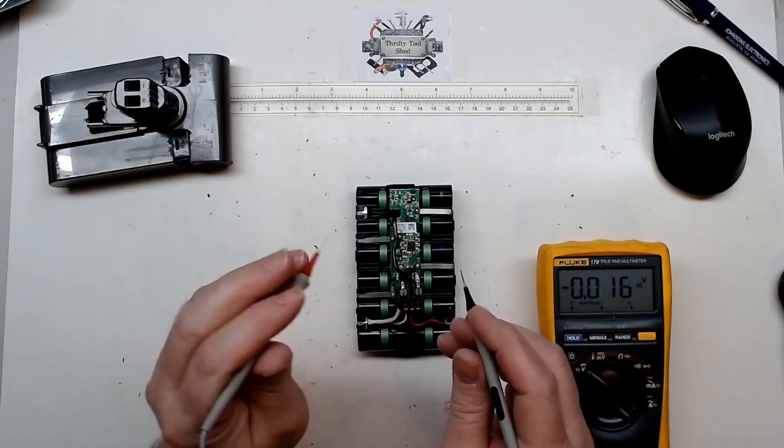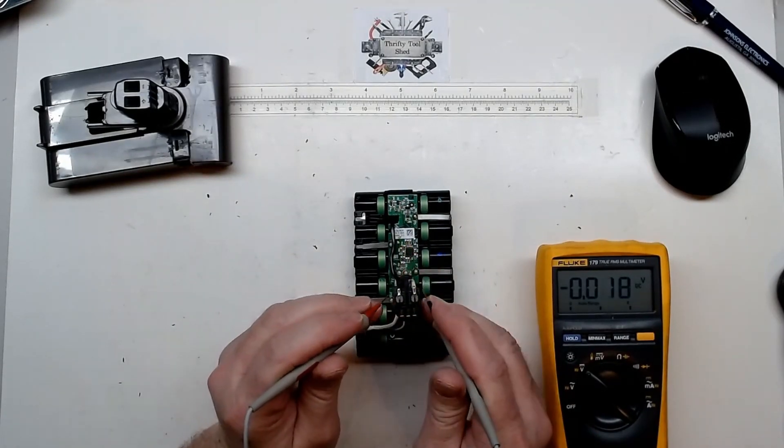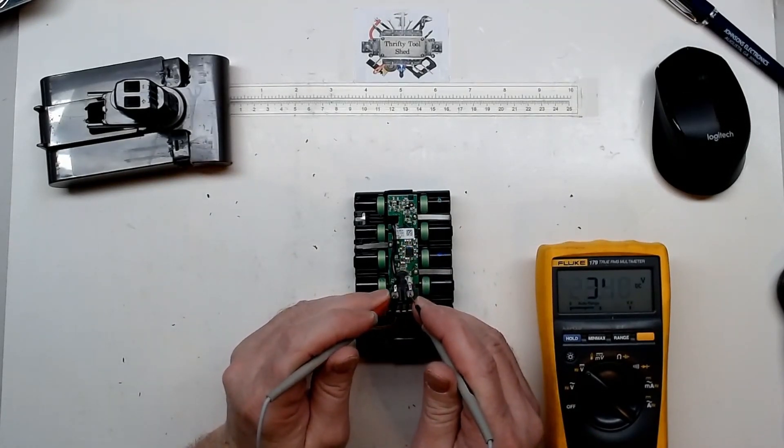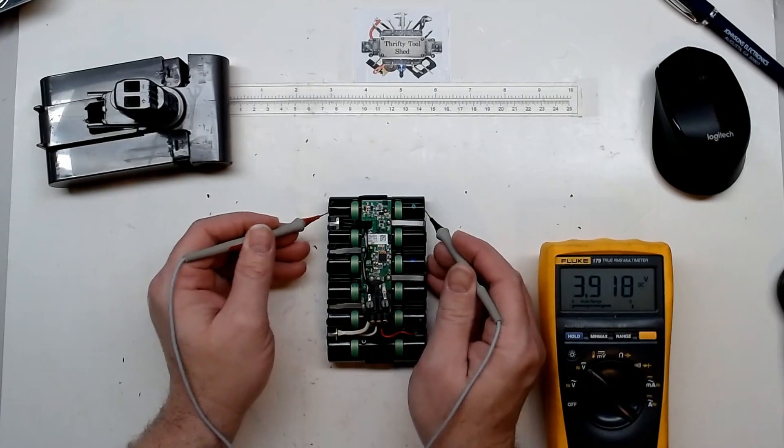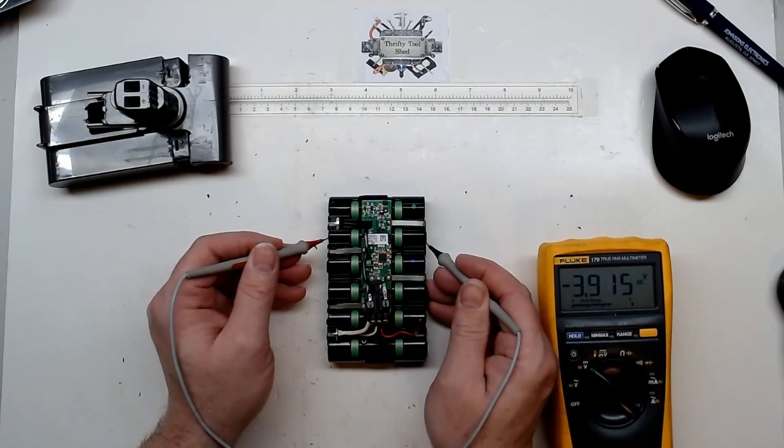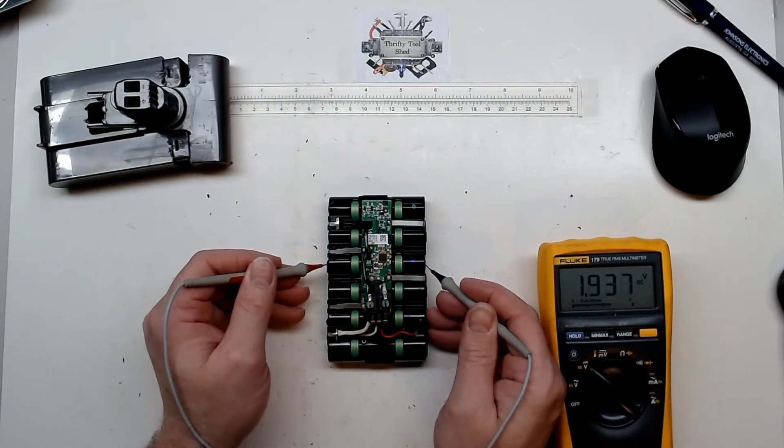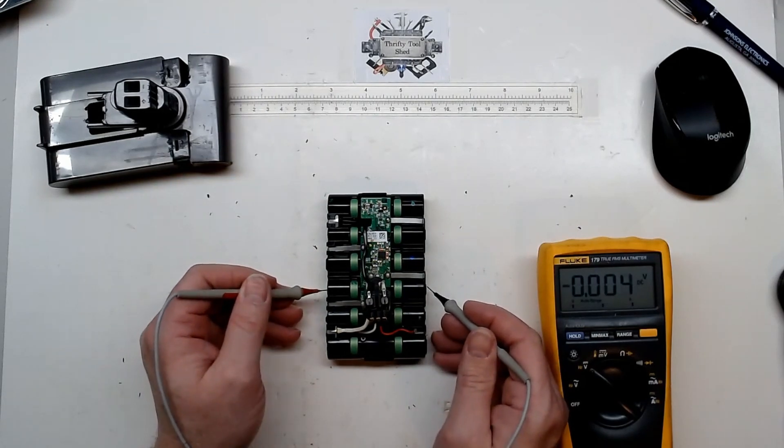So we know that this battery was acting like even though it was fully charged, it was acting like the voltage was dropping out. But if we go across every single cell, we're getting 3.9 volts, like it's really close to fully charged.